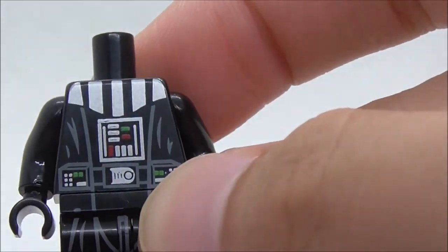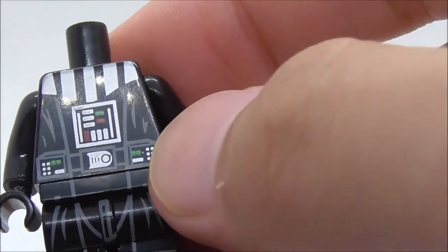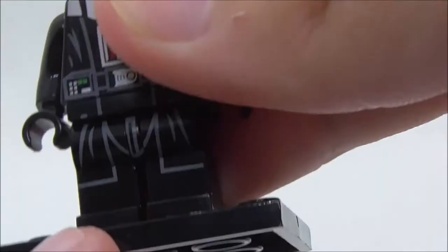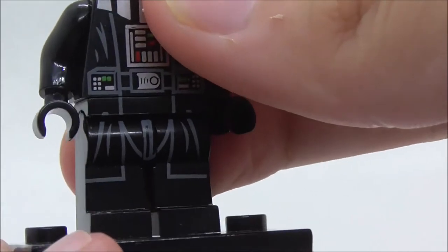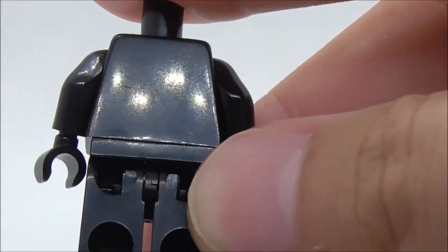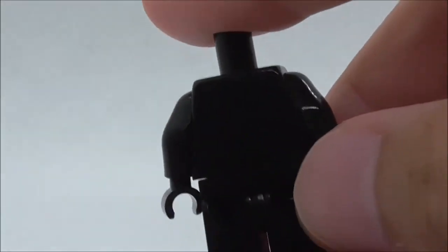You got the belt with more of the life support system with more of the buttons in white and green and the leg printing is just very simple and no printing at the back because the cape covers the back.